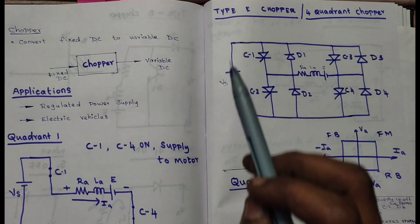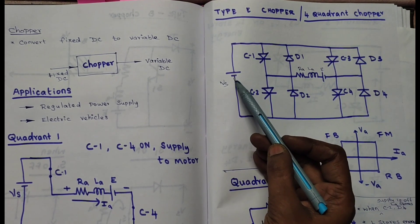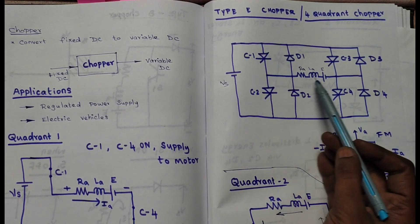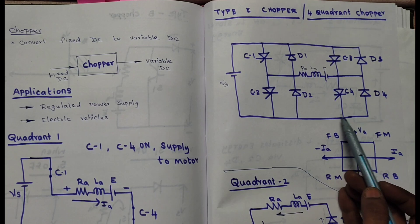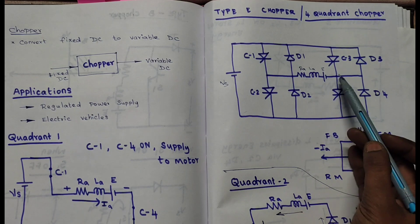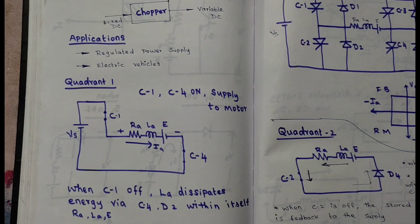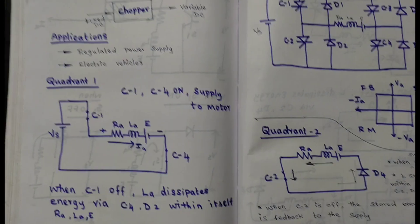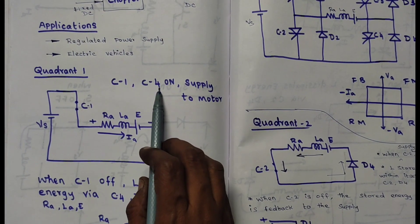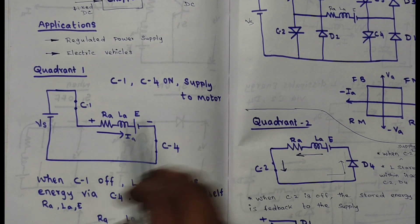In quadrant 1, the current should flow from the supply to the motor. This is achieved via chopper C1 and the motor, then through chopper C4, back to the supply — supply → C1 → motor → C4 → supply. In quadrant 1, choppers C1 and C4 switches are on, and the supply flows through the switches to the motor.